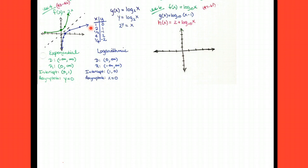So, for an exponential function, we have an intercept of 0, 1. For a logarithmic, that's an intercept of 1, 0. For an exponential, we have the asymptote at y equals 0. For a logarithmic, x and y switch places, it's x equals 0.